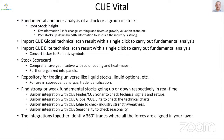QVITAL is a tool to make fundamental and peer analysis of one stock or a group of stocks. It provides root stock insight with key information like percentage change, earnings, revenue growth, values, valuation score, etc. It also provides peer stocks up/down breadth information to assess if the industry is strong. Looking at the homepage, which provides the root stock insight, we are able to know key information about the stock — usually enough to make a Q trading decision — and also see how the industry is doing, using numbers as well as the PR advanced decline graph.